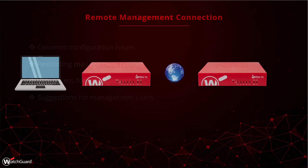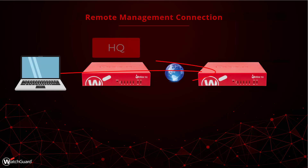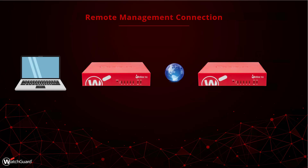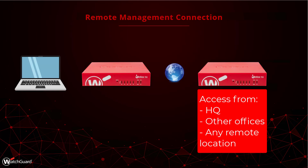This is a pretty common scenario — you're on your management computer and you want to access a Firebox across the internet at another location. Obviously you can allow the traffic through the Firebox at the main site, but how do you configure the remote box to allow connections from your main site or any of your other offices? The first thing you need to determine is which locations you're going to be allowing management access from — if it's just your headquarters or multiple other offices, or any random location.